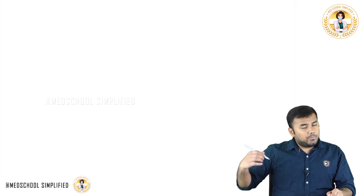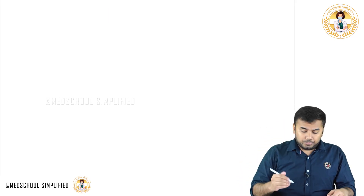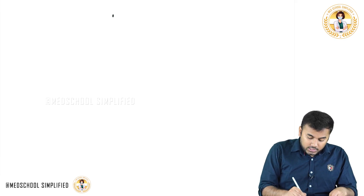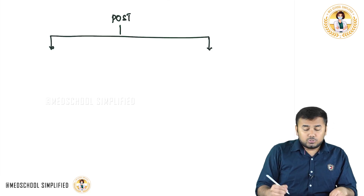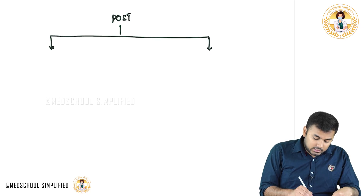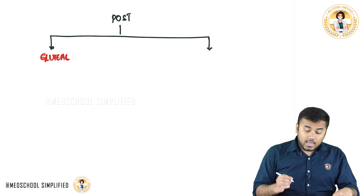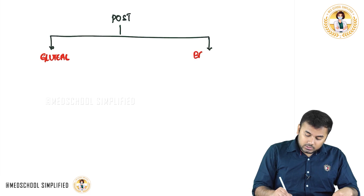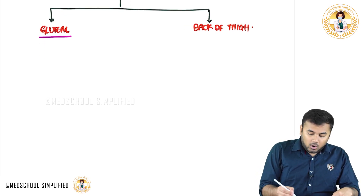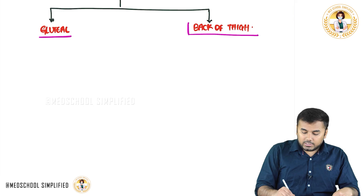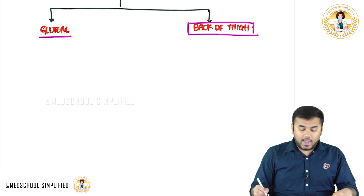Muscles of the back of the thigh. In the posterior compartment, we have discussed the muscles under two groups. One is the muscles of the gluteal region, and the other is the muscles of the back of the thigh. We already discussed the muscles of the gluteal region. Now, we shall focus on the muscles of the back of the thigh.